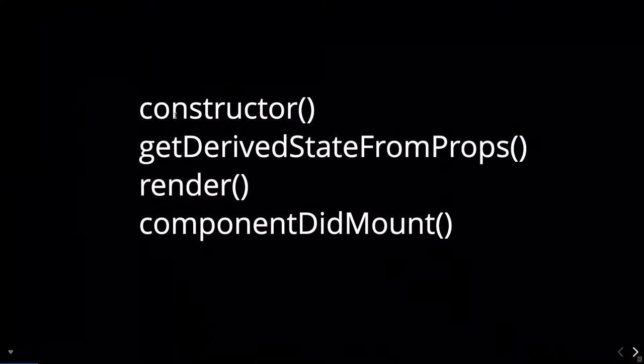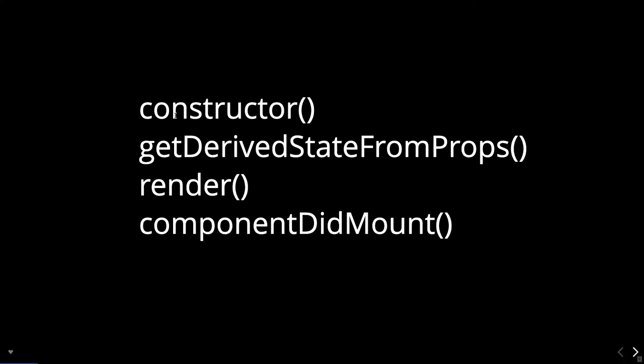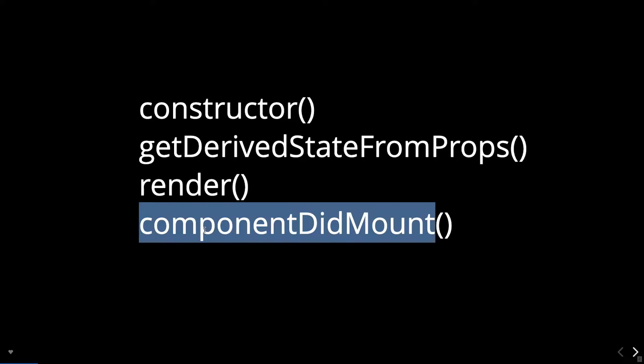While mounting the component we are executing these four lifecycle methods. Constructor is not actually a part of the lifecycle — it is part of an ES6 class — so constructor gets triggered first. Then we have getDerivedStateFromProps, render, and componentDidMount. Constructor is for initializing state, getDerivedStateFromProps may be the right candidate to update the state, then render, and then componentDidMount.